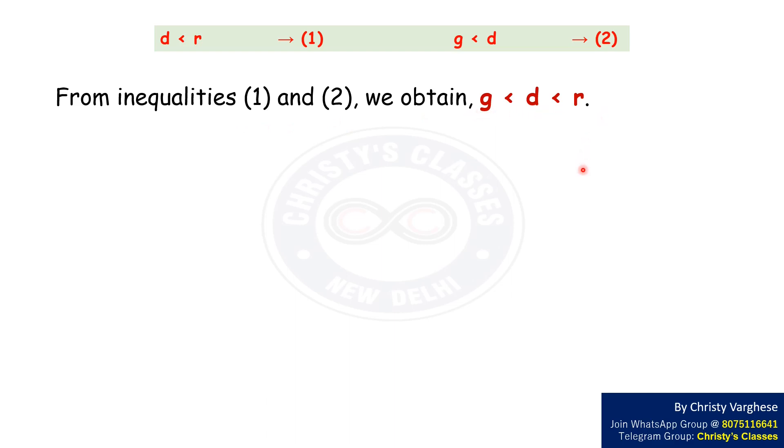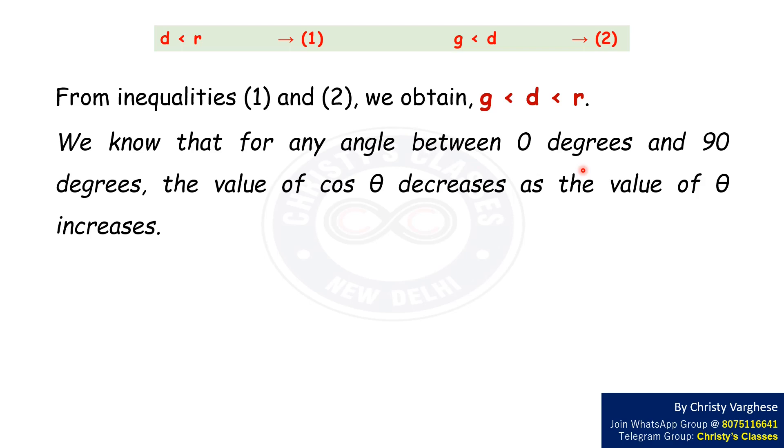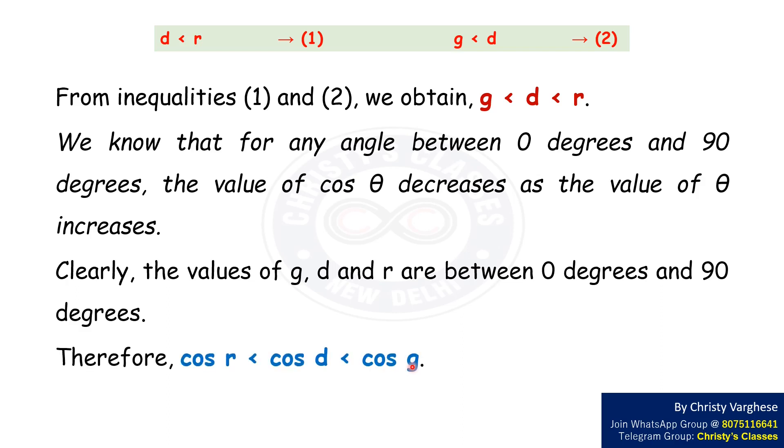We know that for any angle between 0 degrees and 90 degrees, the value of cos theta decreases as the value of theta increases. Clearly, the values of g, d and r are between 0 degrees and 90 degrees. Therefore, cos r is less than cos d, which is less than cos g.